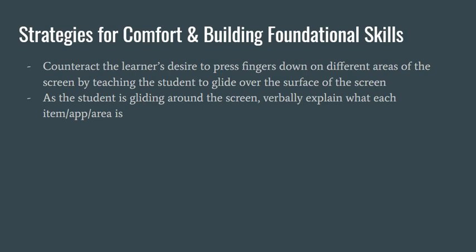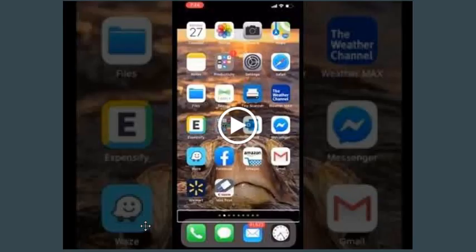Some strategies for building comfort: counteract the learner's desire to press fingers down on the screen. Students with low vision will want to use their vision and push their finger where they think something should go. Teach them to glide over the surface of the screen. You might turn on the screen curtain so the screen isn't visible. As the student glides around, verbally explain what each item, app, or area is before teaching anything about what's on screen — use this whenever teaching a new app.